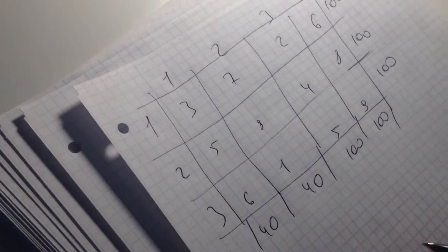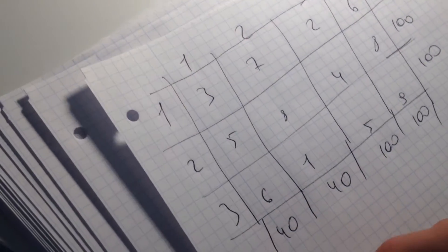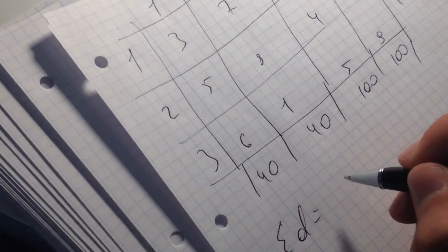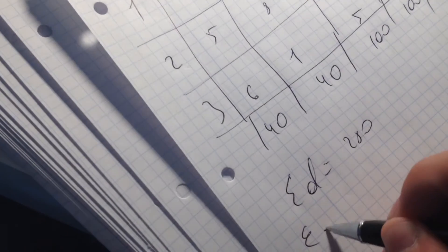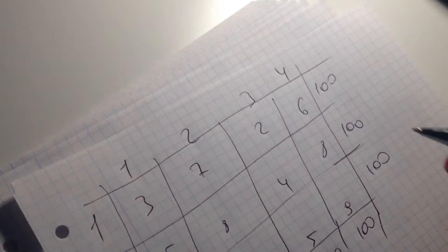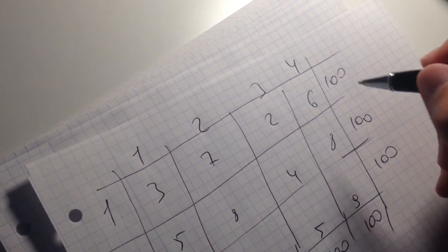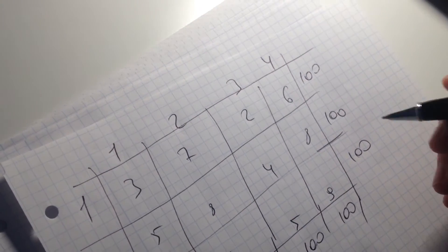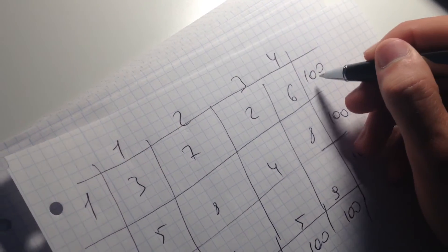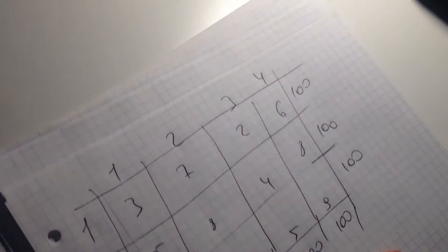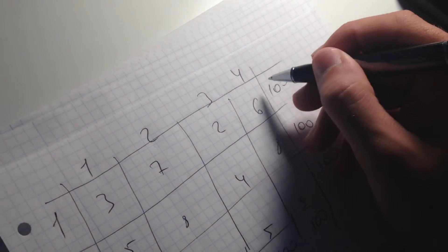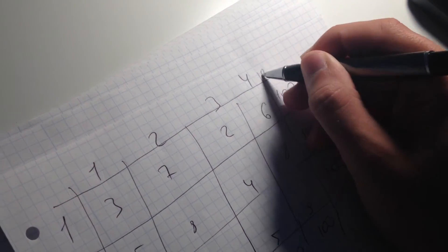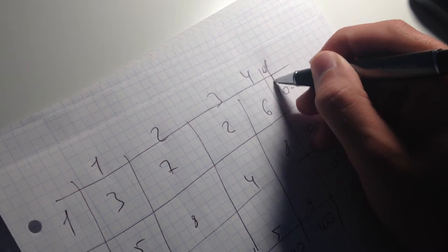So we can see that if we calculate total demand, we have 280. If we calculate total supply, we have 300. We do not have equal demand and supply — that's why we need a dummy variable. We can create a dummy variable and add it here.